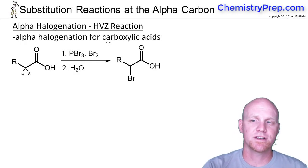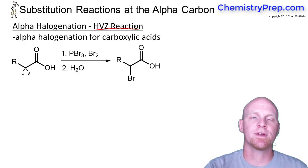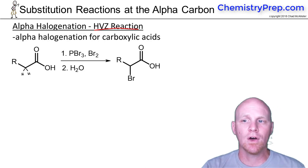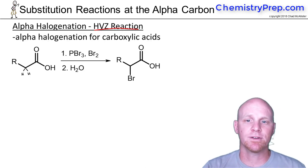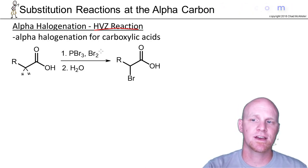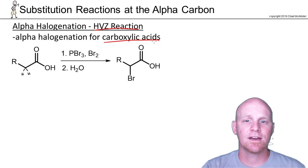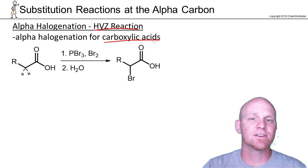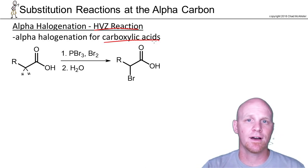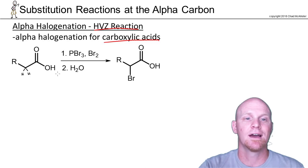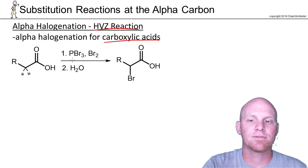The last part of alpha halogenation we'll look at here is what's called the HVZ reaction, or Hell-Volhard-Zelinsky reaction. In this case we're doing alpha halogenation of a carboxylic acid. Carboxylic acids aren't usually acidic enough at the alpha carbon to actually do alpha halogenation, so we have to get a little crafty here.